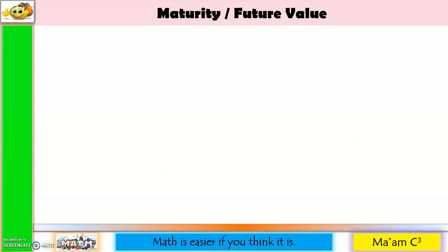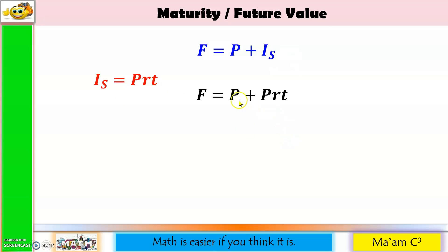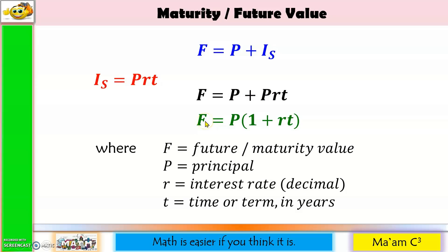Now let us talk about maturity or future value. As defined earlier, maturity or future value equals the principal plus the simple interest. Since interest equals PRT, we substitute to get F equals P plus PRT. Factoring out P, we have F equals P times (1 plus RT), where F is the future or maturity value, P is the principal, R is the interest rate in decimal, and T is the time in years.